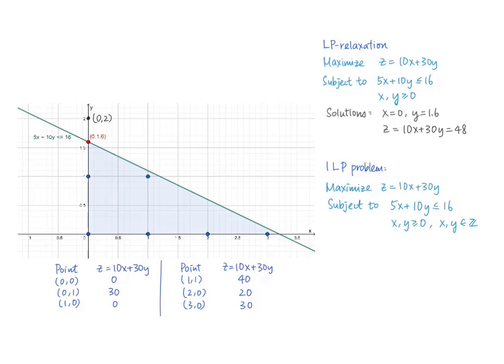If we round up the vertex (0, 1.6), we will get (0, 2). However, this point is not even in the feasible set of both the ILP problem and the LP relaxation. In other words, the point (0, 2) doesn't fulfill all constraints in the ILP problem. As a conclusion, the optimal point of the ILP problem is not necessarily the round up or the round down of the optimal point from the LP relaxation.